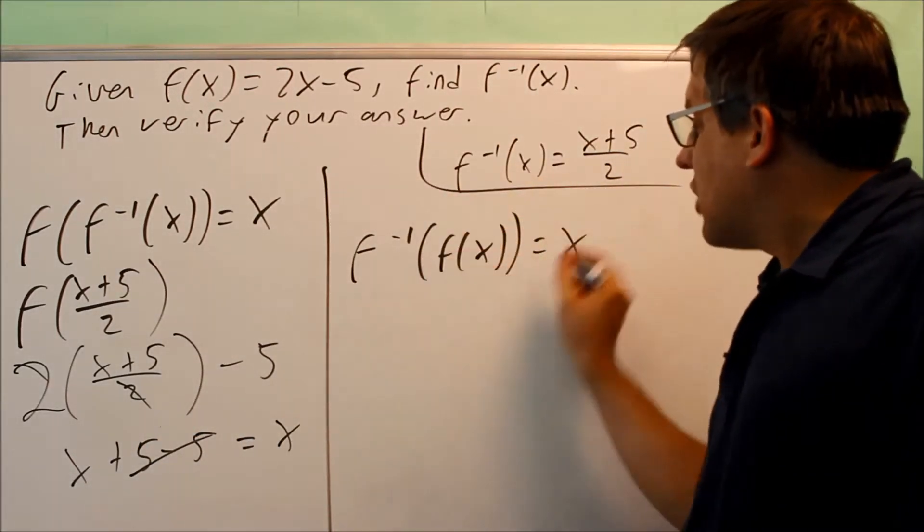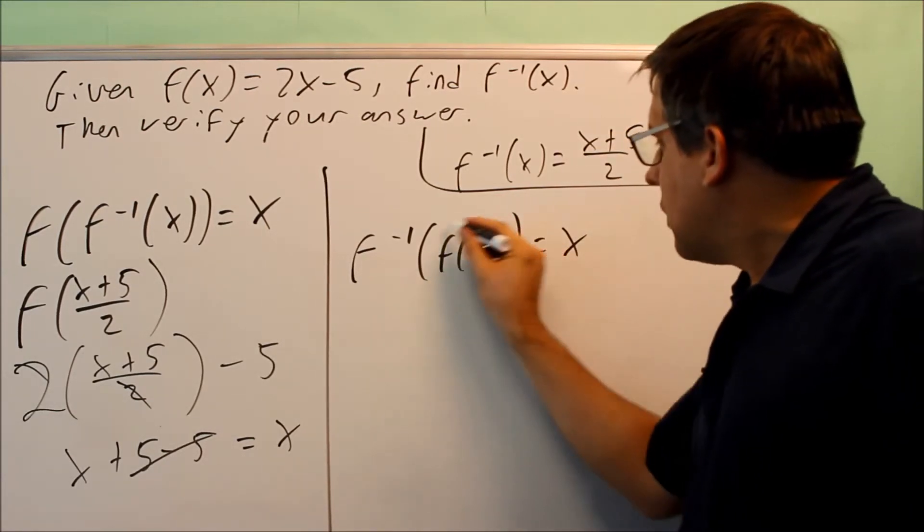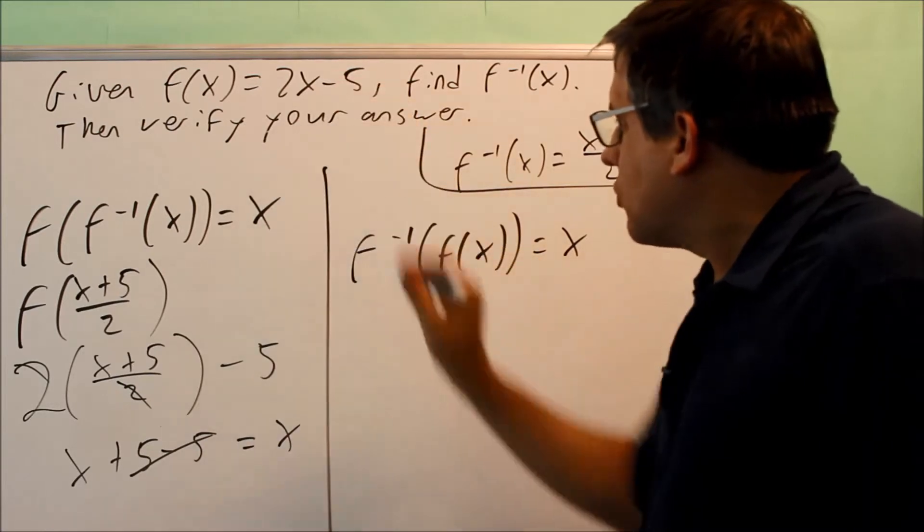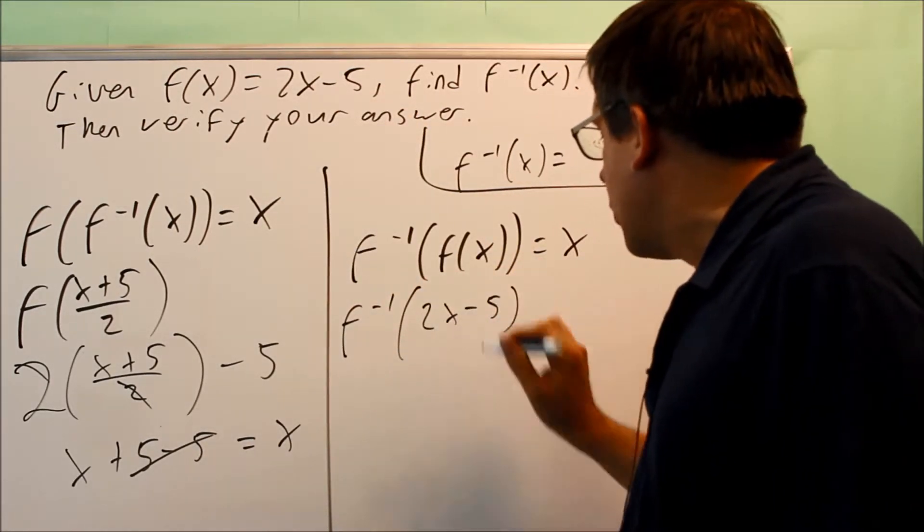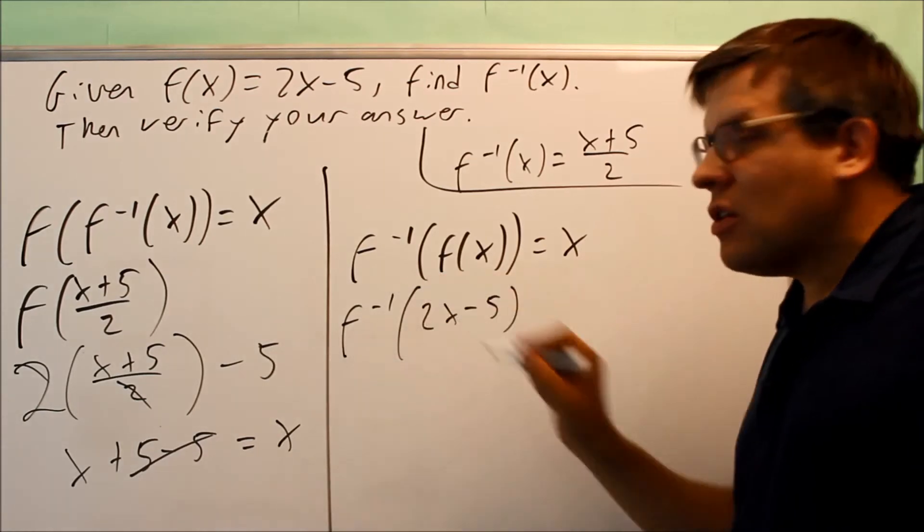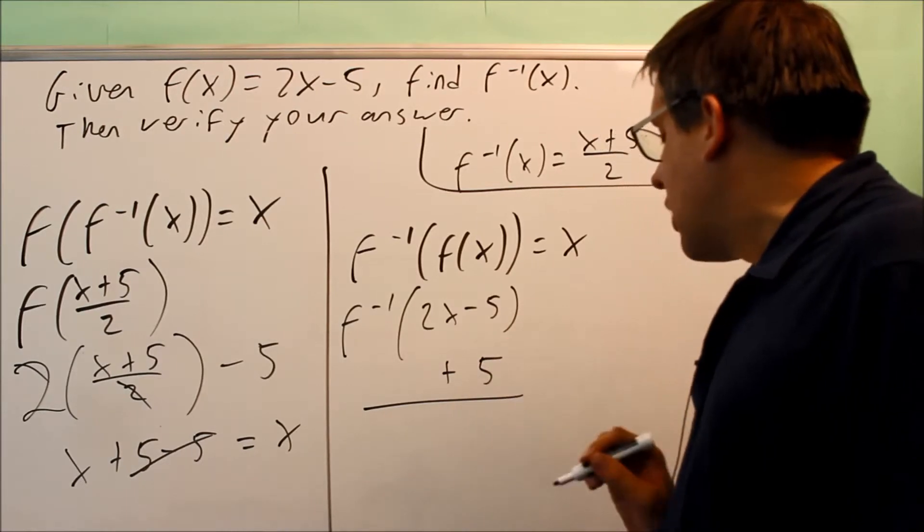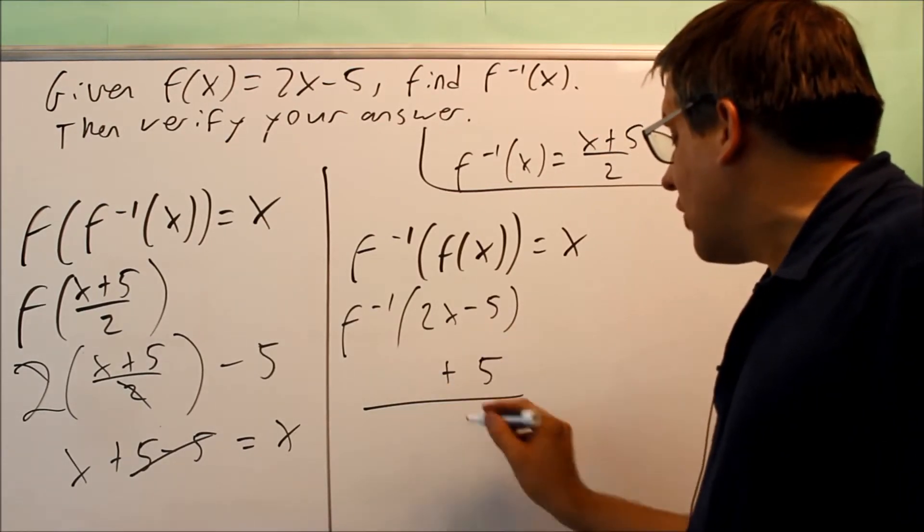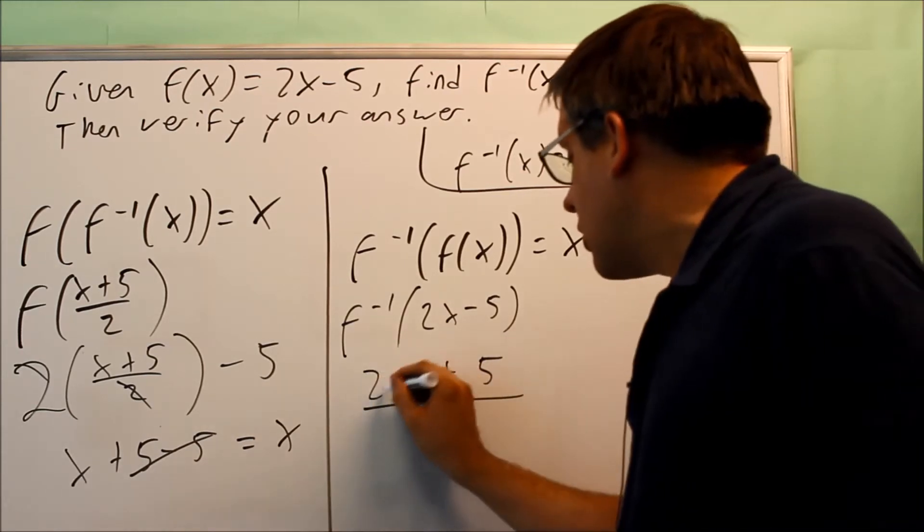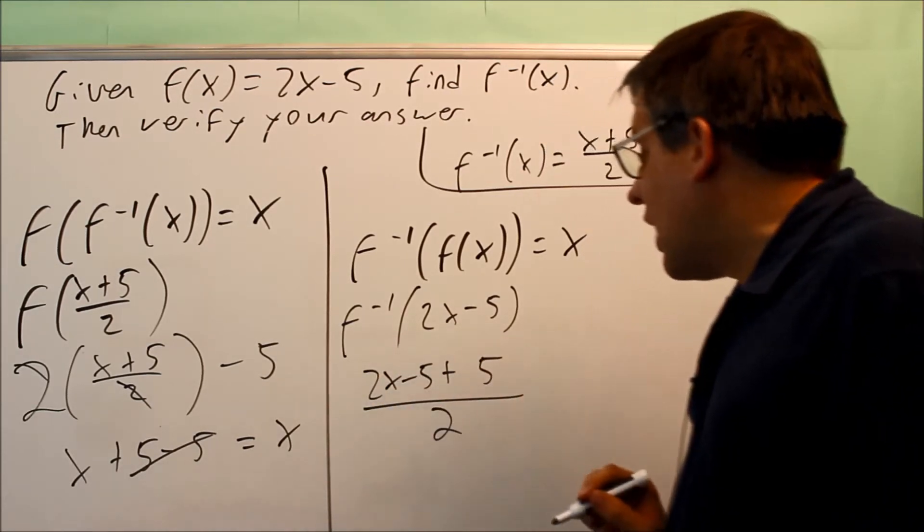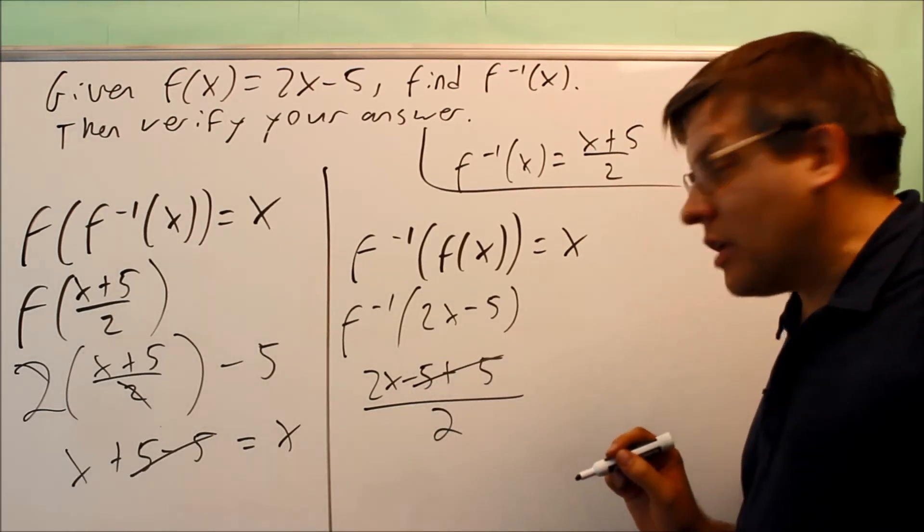So now I'm going to do exactly the same thing here. My inverse is x plus 5 over 2. I'm putting inside of it 2x minus 5. So it's going to look like this. I want to put 2x minus 5 into the inverse. Here's the template. I have something plus 5. So I have a space plus 5. That's all divided by 2. In this space right here, I'm going to put 2x minus 5 in place of the original x that was there.